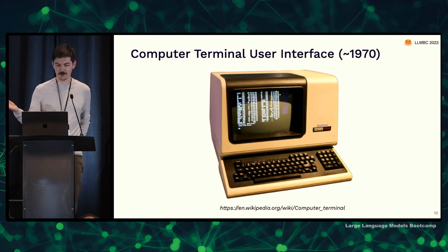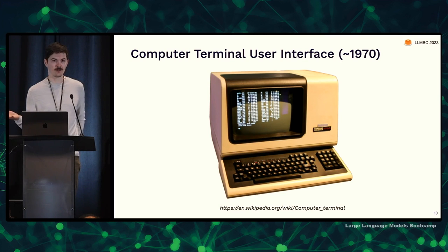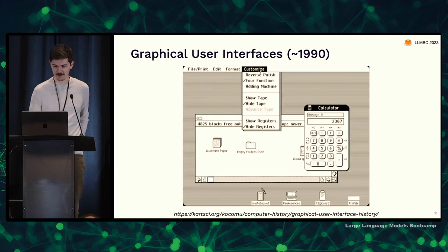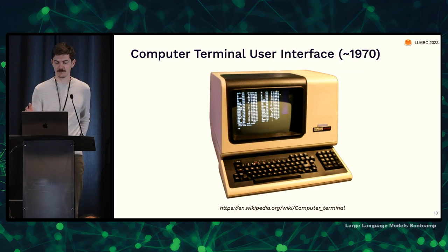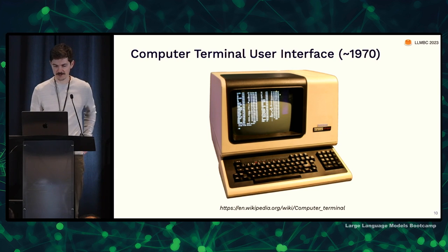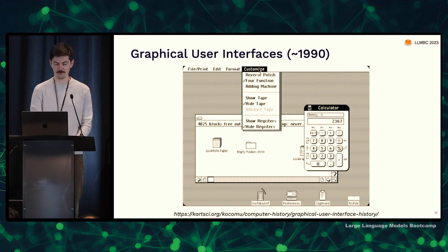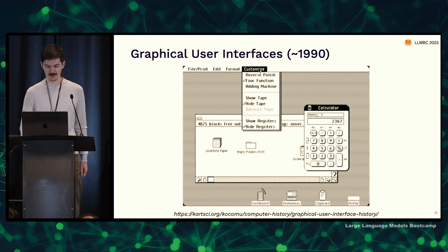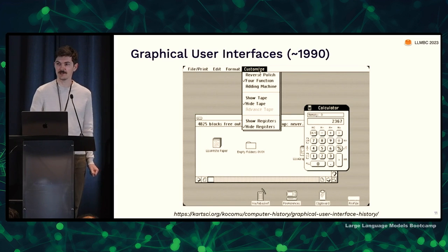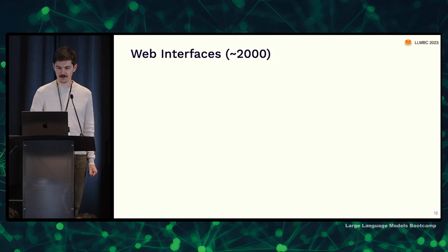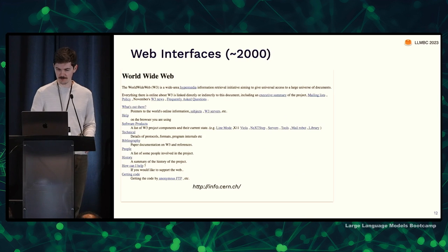By the 1970s, we had the computer terminal, which is really what we think about when we talk about digital interfaces today. It has a keyboard as the input mechanism and a screen that shows mostly text as the output interface. That was quickly followed by graphical user interfaces that came out in the mid-80s, and the notion of windows, tools, a desktop, and files has all been pretty stable since about the 1980s.